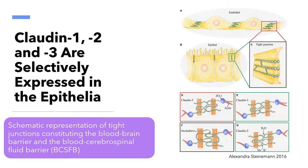In figure E, the BCSFB, represented by the green box, is characterized by claudin-3, which acts as a sealant alongside claudin-5. Occludin, a tetraspan transmembrane protein with 2 large extracellular loops, is an obligatory member of tight junction strands, as shown by the black box. Finally, in figure G, claudin-2, a member of tight junction strands in the BCSFB, is a paracellular water and cation channel.